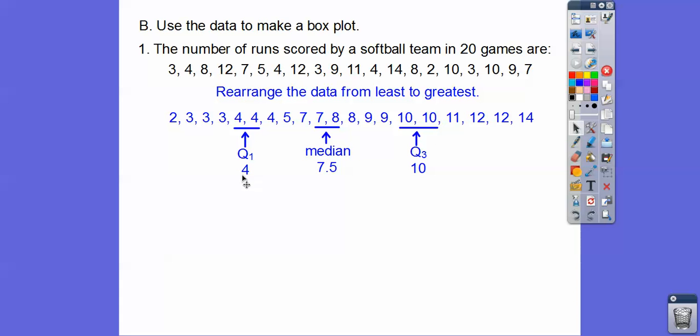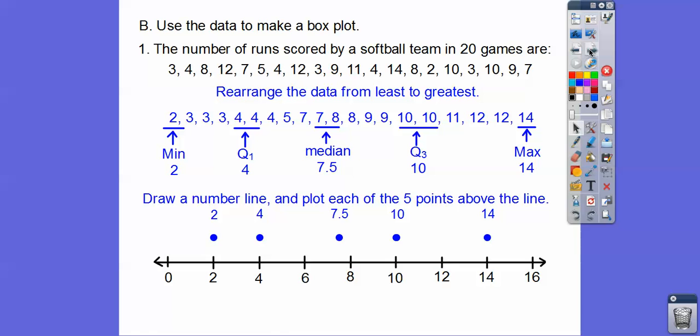So quartile 3 is 10, quartile 1 is 4. This is where we're going to draw our boxes from, and the whiskers are going to extend out to 2 and to 14. The 5 number summary system is 2, 4, 7.5, 10, 14.